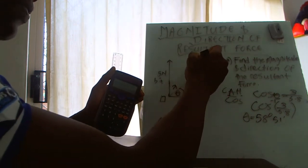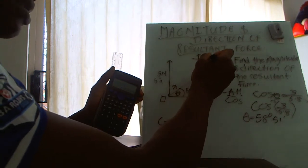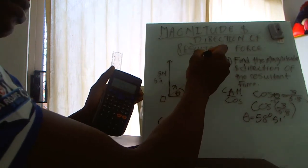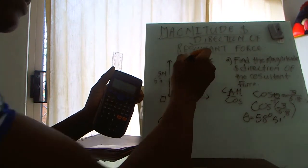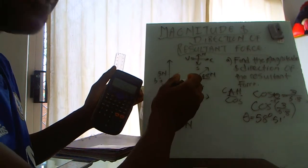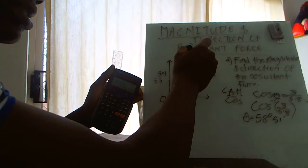Remember our signs: north, east, south, west. Where is this facing? It's going that way, so it's going this way.